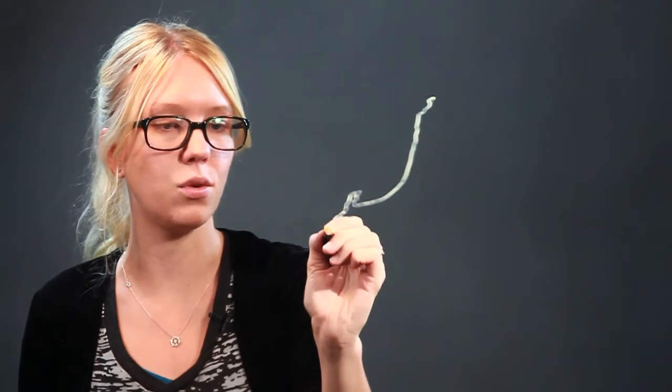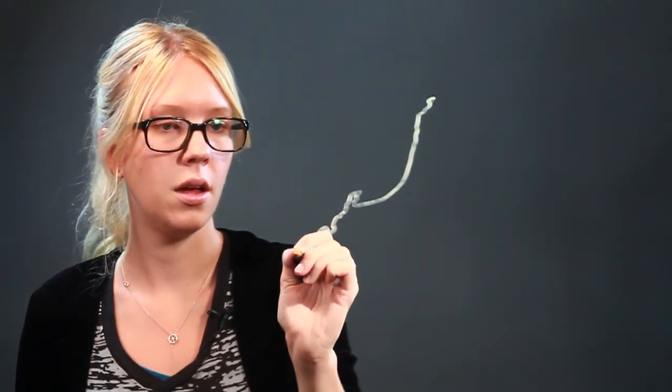So we're going to start with the main island, which comes down like this. Now the little details don't matter as much. You can make the coastlines nice and squiggly, just as long as you get the basic shape right.